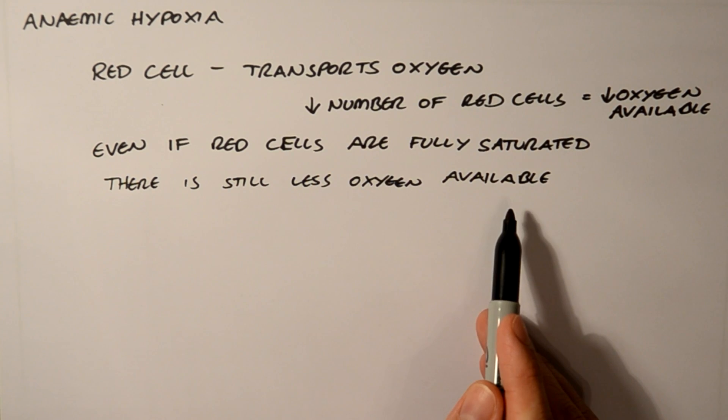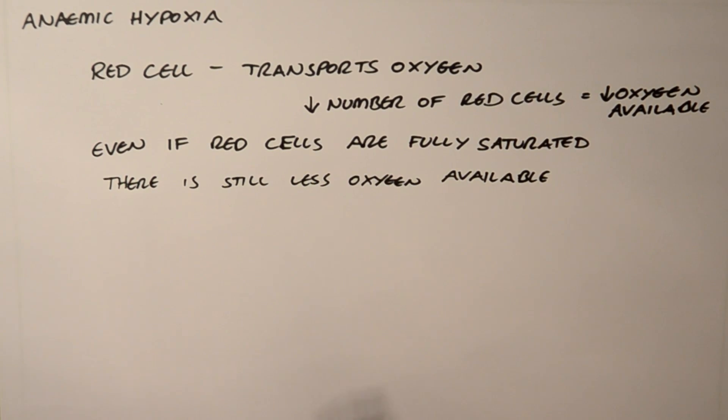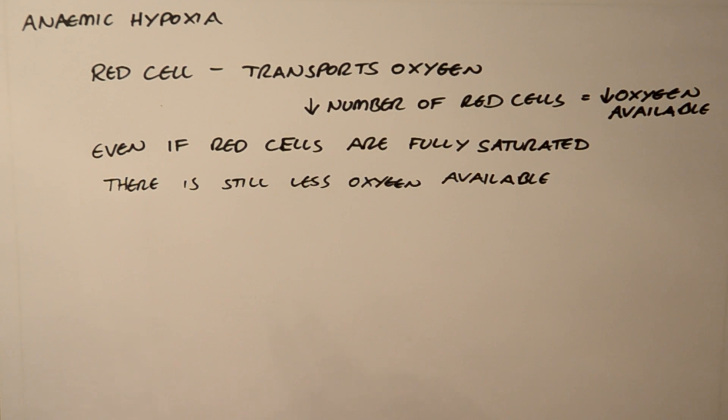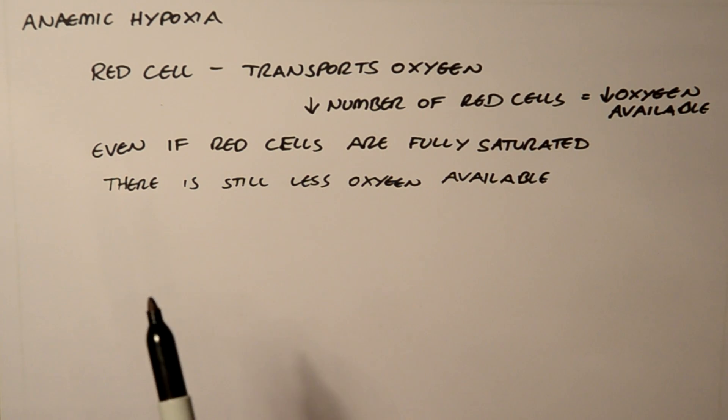Why is this important? Well, when you put on a pulse oximeter onto a patient's finger or earlobe, and it reads, let's say, 97%, you might think this patient is getting adequate oxygen, they are not hypoxic. Well, actually, even if the pulse oximeter is reading 97%, they may still be getting tissue hypoxia because of the anemia. This is why it's very important to remember the red cell and remember anemia.